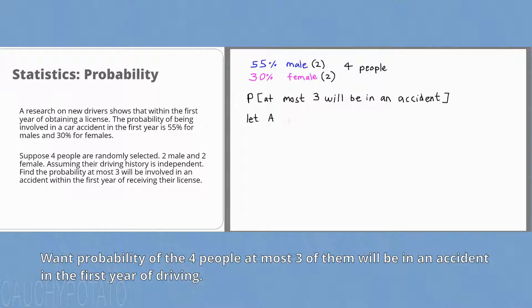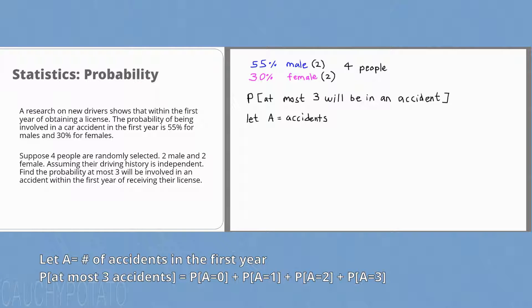Let A equals accidents. Since we want at most three will be in an accident, let's take a look at the probabilities individually. Probability A equals zero, which is zero accidents. Probability A equals one, which is one of them has an accident.